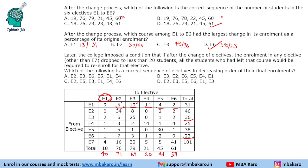We need to find the decreasing order of final enrollment. The highest is E2 (71), followed by E3 (69), then E6 (59), then E5 (41), then E1 (40), and finally E4 (20). So the correct order is E2, E3, E6, E5, E1, E4.